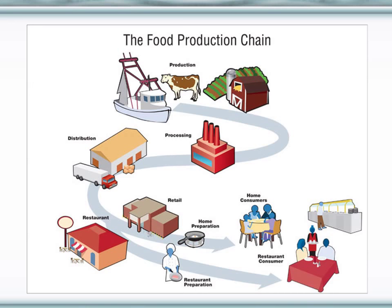First, we start off at the farm, where we raise animals and raise fruits and vegetables. They have to be picked or killed and then sent to processing facilities where they are packaged and ready for distribution. They're sent from processing centers to distribution centers which store these foods and then send them out to retail stores — grocery stores — or to restaurants. If they go to retail stores, there's one more step: taking foods home, cooking them, and preparing them for consumption. At the restaurant, we go there and we're done at that level.